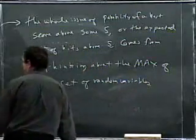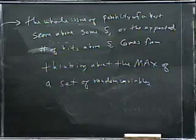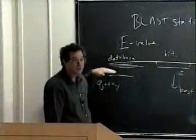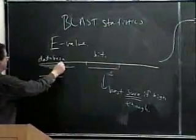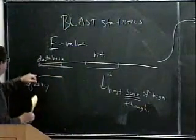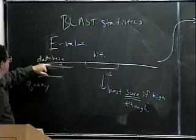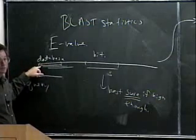Which random variables are we talking about? We're talking about, on the assumption that this database is random, we're saying what would be the alignment. You place your query down here, you get an alignment value, you get some score, S.